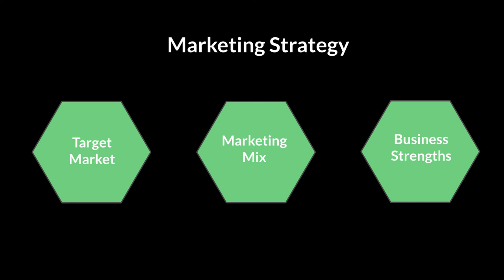Once marketing objectives are decided, the marketing department must internally come up with a marketing strategy. They look at three things to figure out what that strategy is going to be. First is the target market: what type of audience are you targeting, what income levels do they have, what are their tastes, and how frequently do those change? You have to narrow down to one particular group of people that you'll be targeting with your product.